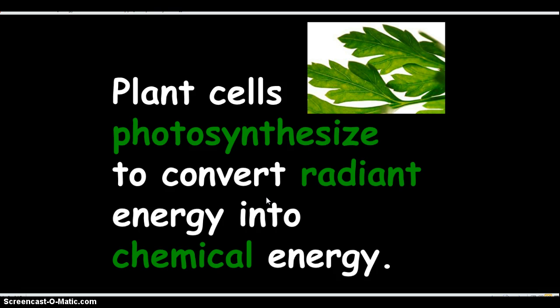Plant cells photosynthesize to convert radiant energy to chemical energy. Radiant energy is sun energy. They need sun energy and they're going to turn it into chemical energy. Remember, chemical energy is found in food. Plants are food. So they convert sun energy into chemical energy, and then we end up eating them. That's what's in our food — chemical energy.